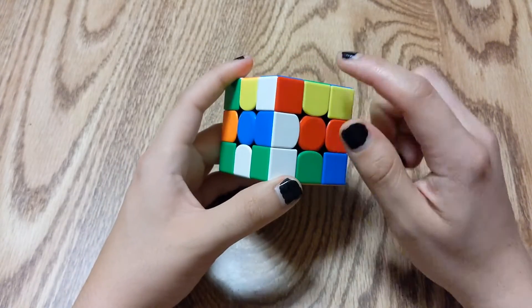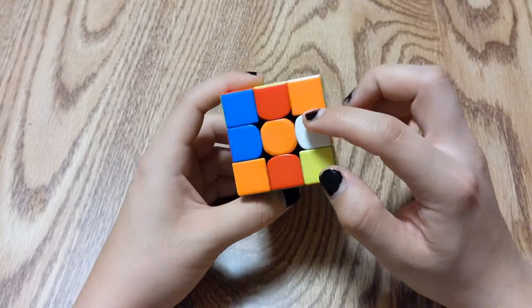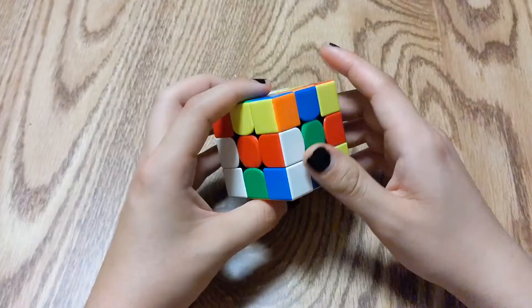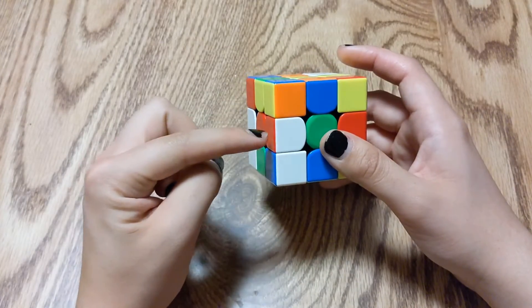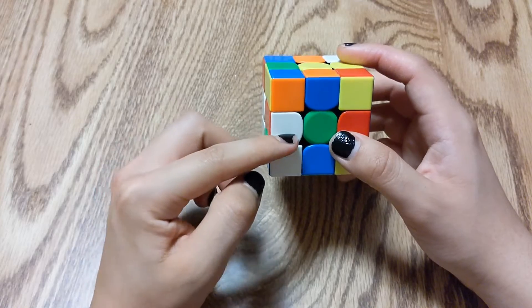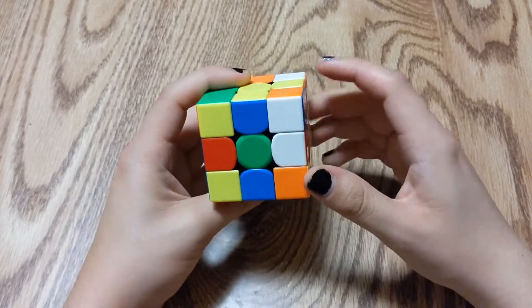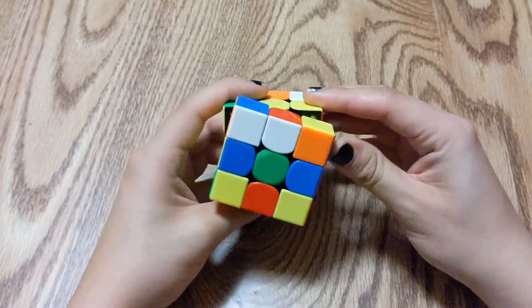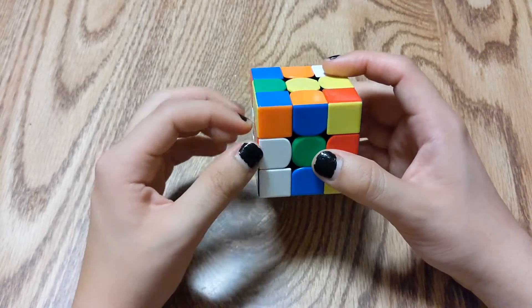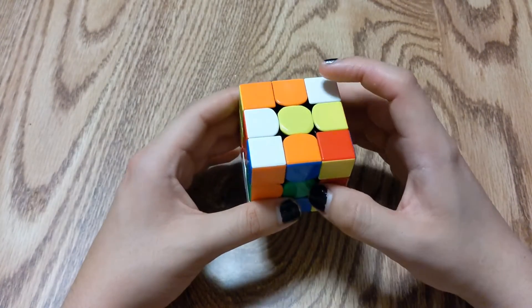Now we're going to be looking for any edge piece that has white on it. Let's start with this one. If you have the edge piece and it's like this on either the left side or the right side, all you're gonna do is bring it to yellow.